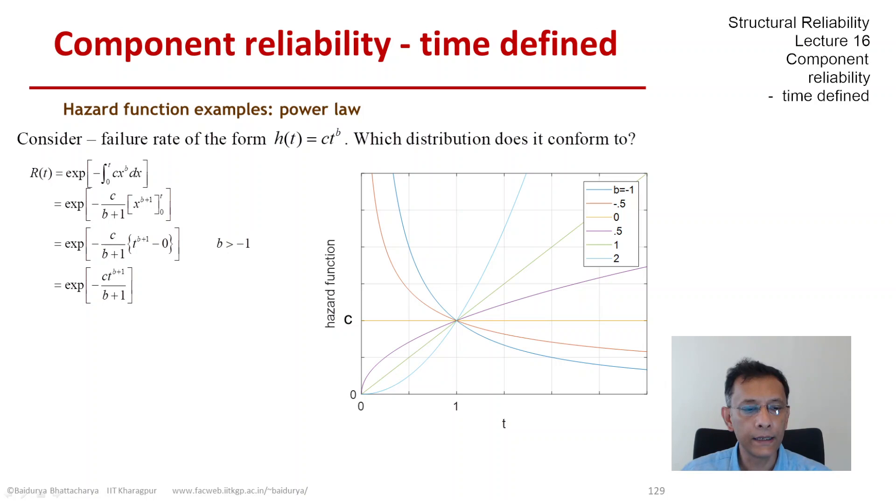Now let us subtract that from 1, and that gives me the CDF of the time to failure whose hazard function has that power law type c t to the power of b. This should look familiar.